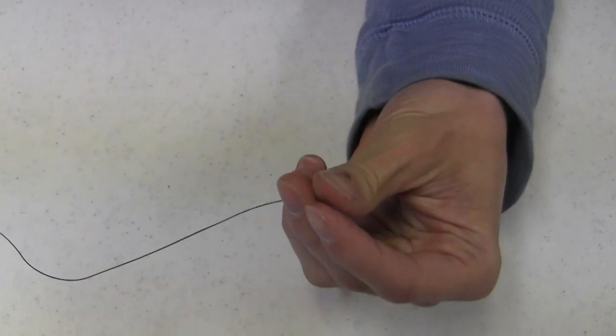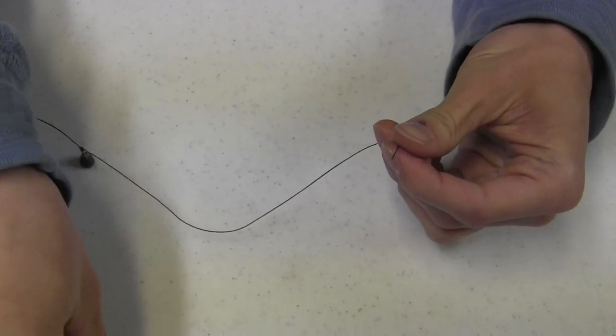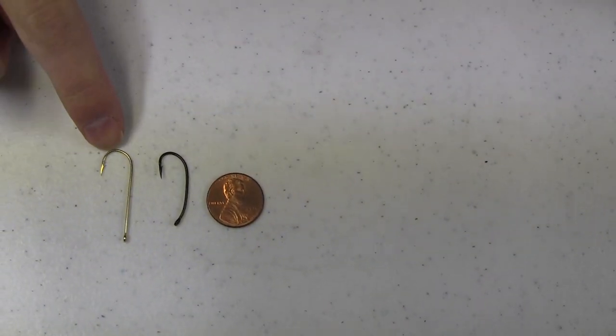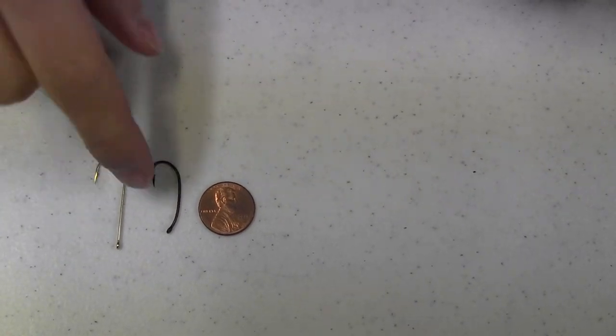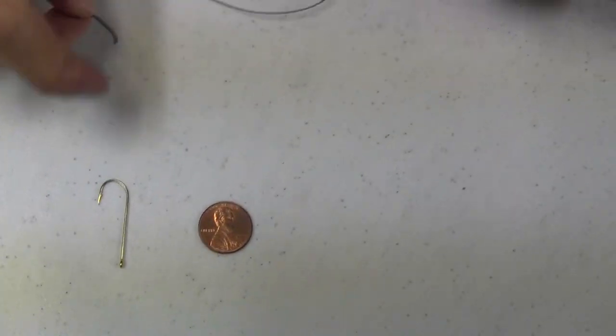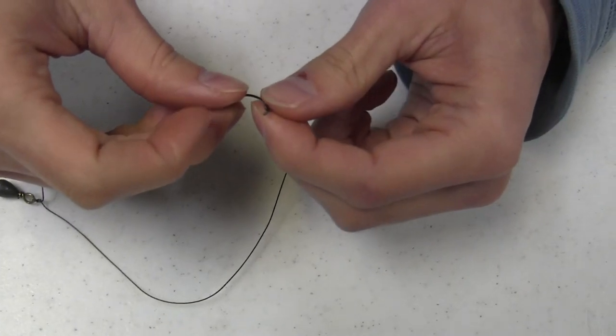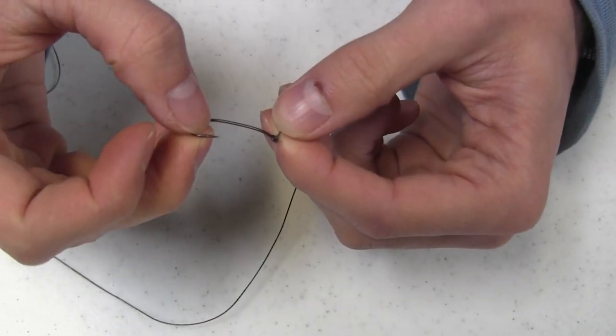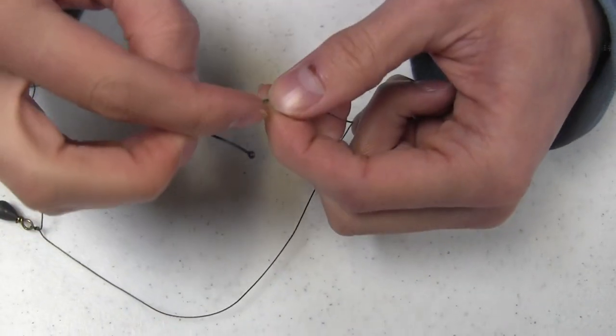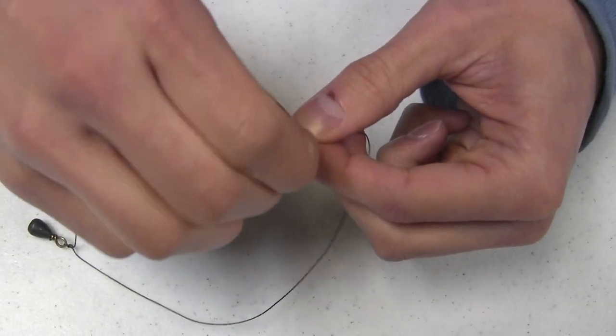And this is only a fourth ounce to an eighth ounce. This hook right here I'd use more for a minnow because it has a longer and skinnier shaft, which basically when you're hooking minnows does less damage and they live longer. But for worms I like using a little shorter hook.